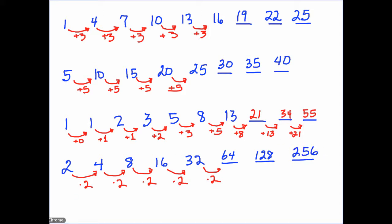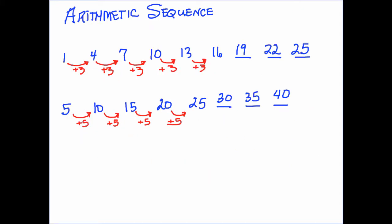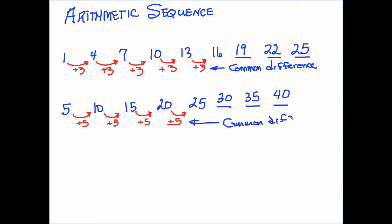So those are four examples of different sequences. Two of the sequences we looked at are called arithmetic sequences. A sequence is arithmetic if there's a common difference — in other words, the difference between successive numbers of the sequence is always the same. In the first sequence, the common difference is 3. In the second sequence, 5 is the common difference.